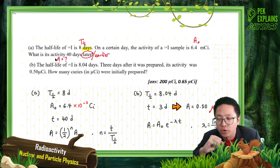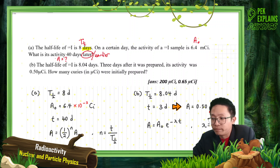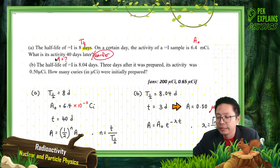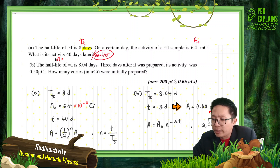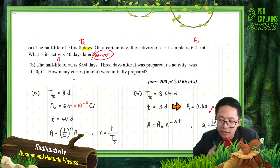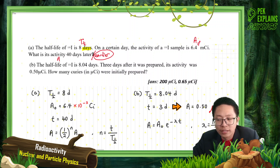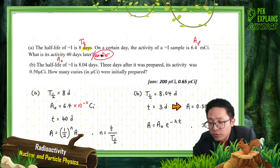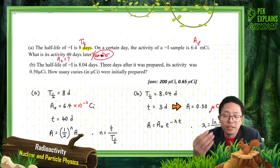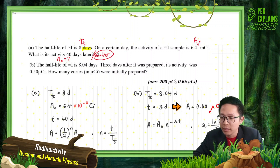For this question, it asks for final activity. But if the question asked for 40 days earlier, that means 40 days earlier is the earlier point. The activity given is the final activity, and what you want — the activity 40 days earlier — is the initial activity. That's very important; just the difference of one word can change the whole meaning.